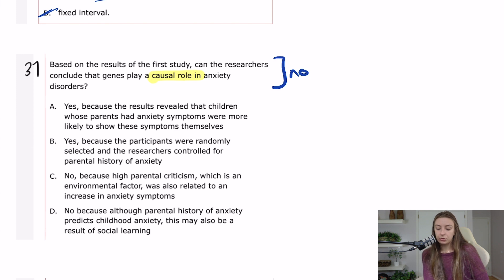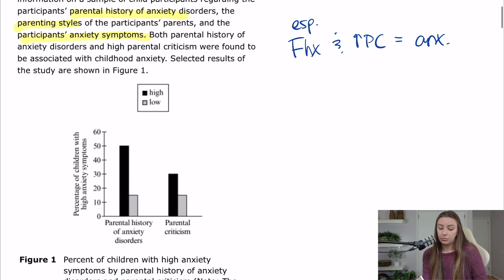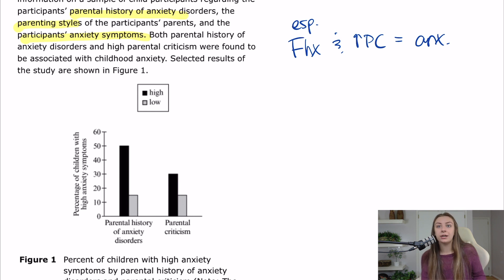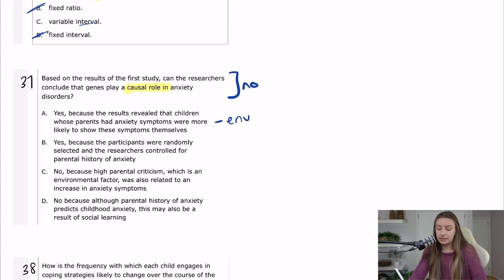Answer choice A says yes, because children whose parents had anxiety symptoms were more likely to show these symptoms themselves. But we can't confirm this is genetic — an anxious parent raising a child in an anxious household might be teaching the same triggers through environment, not genes. If an anxious parent watches the ID channel and constantly reminds their child of dangers, that's environmental, not genetic. We cannot tease apart genes from environment with this experimental method.